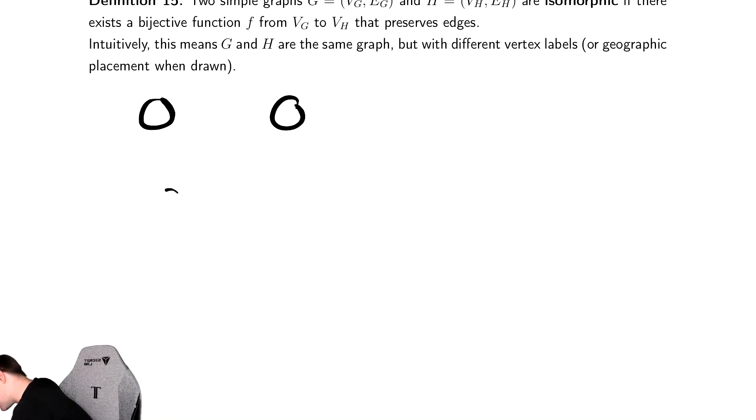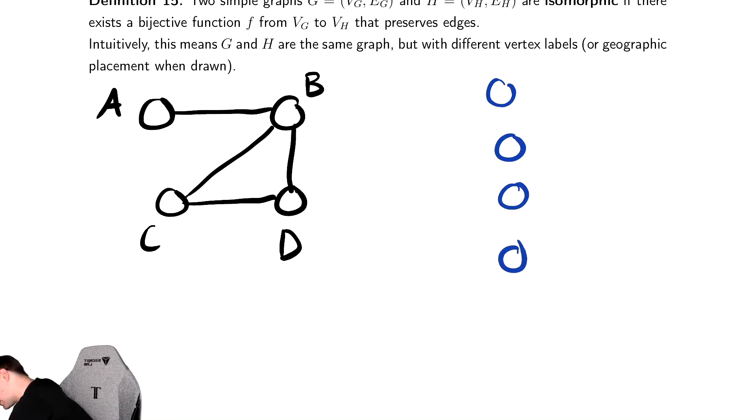The following two graphs are considered the same. So we have this graph, and I'm going to label these vertices as A, B, C, and D. If I draw another graph over here that looks like A, B, C, D, A being connected to B, B being connected to C, C being connected to D, D is also connected to B.